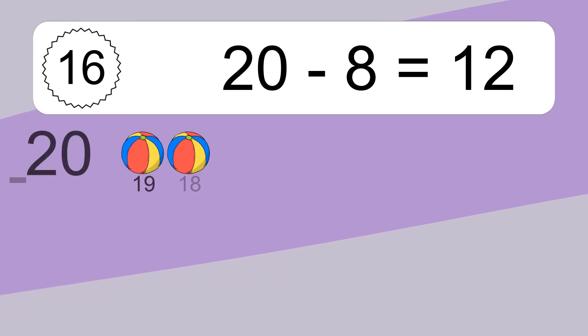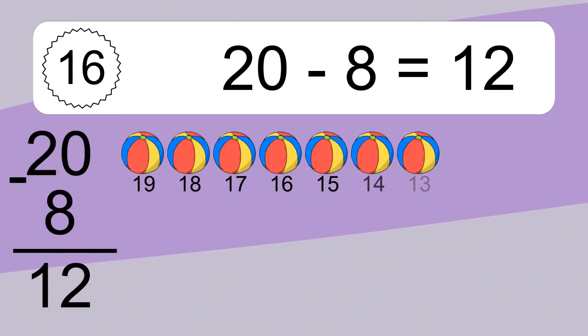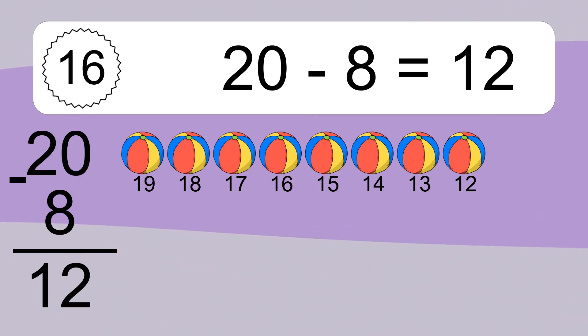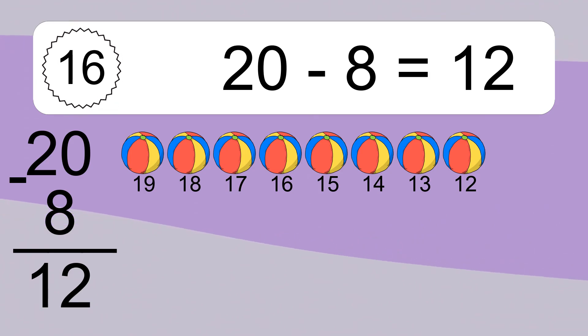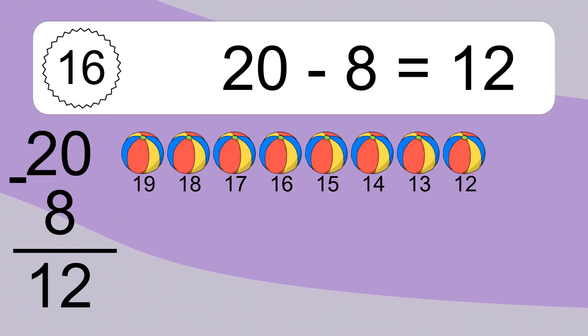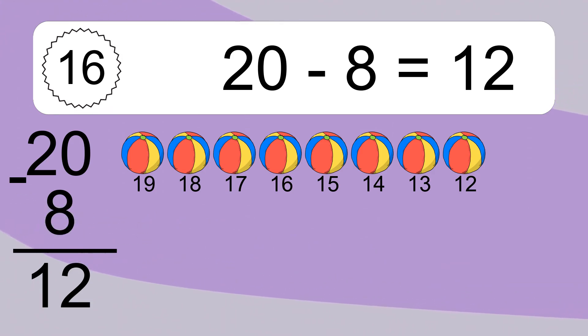20 minus 8 equals what? 20 minus 8 equals 12. Let's count it: 19, 18, 17, 16, 15, 14, 13, 12.